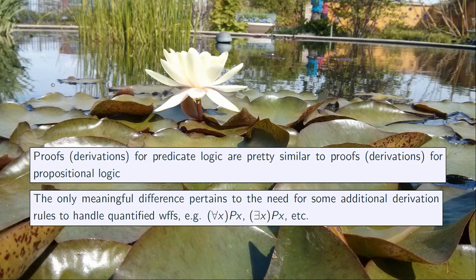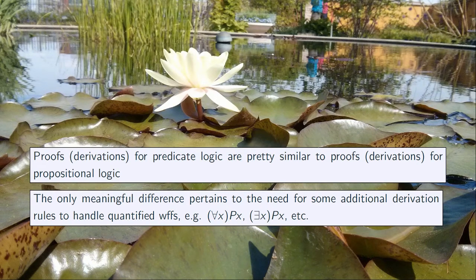The significant or meaningful difference pertains to the need for some additional derivation rules to handle quantified well-formed formulas. That is, in predicate logic proofs we have formulas where the main operator is the universal quantifier or the existential quantifier, and we'll introduce some derivation rules that allow us to reason with or to these types of well-formed formulas.